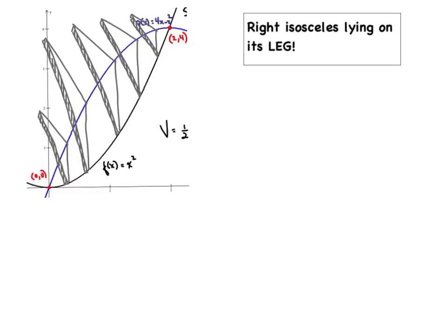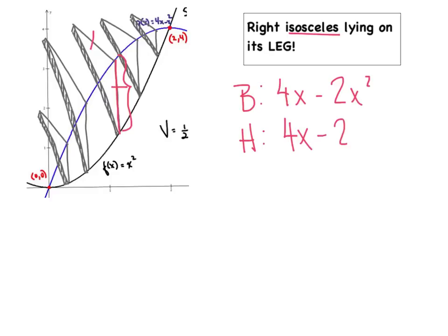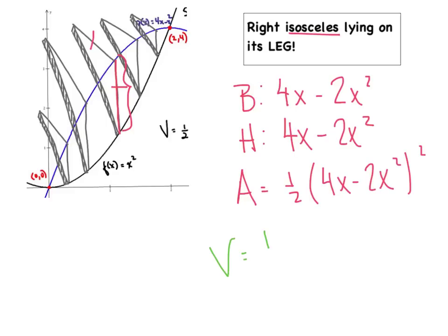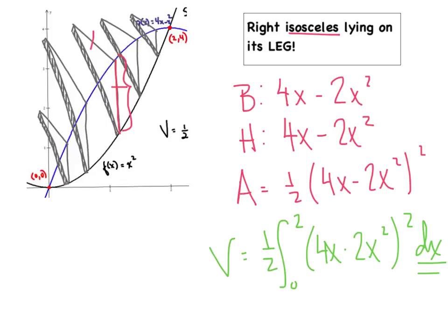If I had to rank all the cross-section types, isosceles lying on its leg is one of the very easiest. Using the same region, the base is 4x − 2x². For an isosceles triangle, the height equals the base, so height is also 4x − 2x². The area is (1/2) base times height, giving (1/2)(4x − 2x²)². Volume is (1/2)∫₀²(4x − 2x²)² dx. Make sure to include your dx — don't lose a simple point on a free response question.